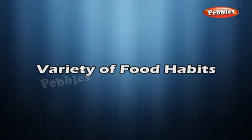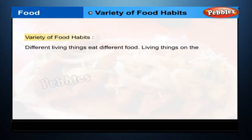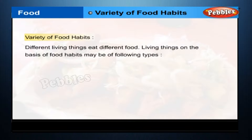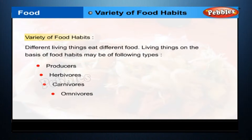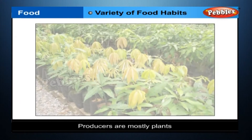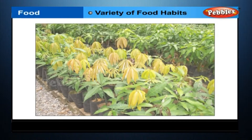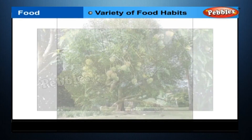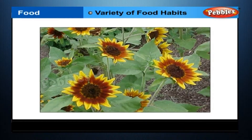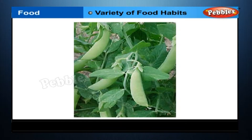Variety of food habits. Different living things eat different food. Living things, on the basis of food habits, may be of the following types: producers, herbivores, carnivores, omnivores. Producers are mostly plants. They are so-called because they can prepare or provide their own food. All green plants which we see around us, like a peeple tree, mango tree, sunflower plant, and a pea plant are such plants.